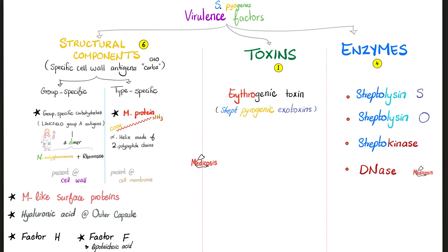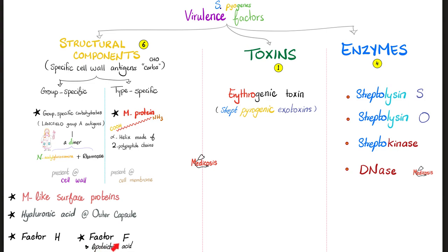Type-specific structural components include M-protein — very important. Like any protein, it has a carboxyl end (C-terminus) and an amino terminus (N-terminus). It's a protein with an alpha-helical structure made of two polypeptide chains. The group A-specific carbohydrates are in the cell wall, which possesses N-acetylglucosamine. The M-protein is part of the cell membrane. We also have M-like proteins on the surface, hyaluronic acid in the outer capsule, and factor H and factor F with lipoteichoic acid in the cell membrane.